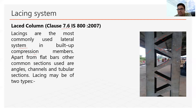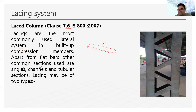Commonly, lacing bars are flat bars — flat bars look like this. Generally this flat bar is used as a lacing member. But beside flat bars, sometimes we use angle sections also. In case of heavy built-up columns, sometimes we use channel sections as the lateral system. Sometimes we use tubular sections like hollow rectangular pipes or circular pipes. But the most common section used in lacing is the flat bar.